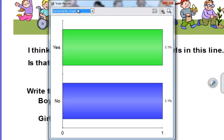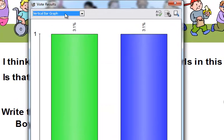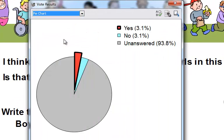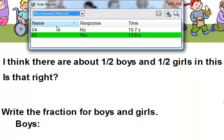I can choose to view these in a variety of ways. I can choose a horizontal bar graph, I can choose a vertical bar graph, I can choose a pie chart. And one of my favorite options is who answered what list, and this is going to allow you to see which devices and what their response was.